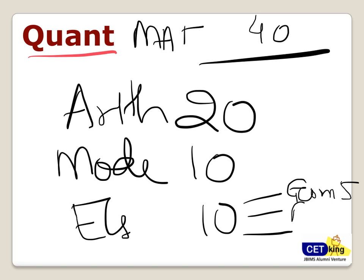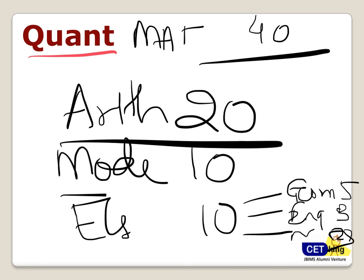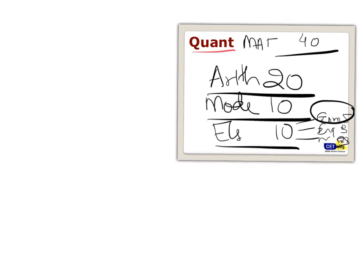Algebra equation based 3-4 questions and number based 3 questions. So arithmetic 20, modern maths 10, and everything else 10 which contains geometry as 5 questions. Now if I talk about breakup of arithmetic: